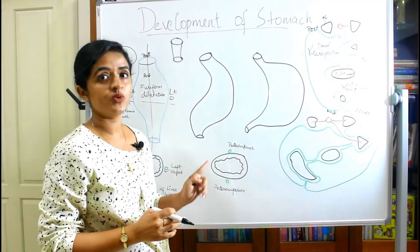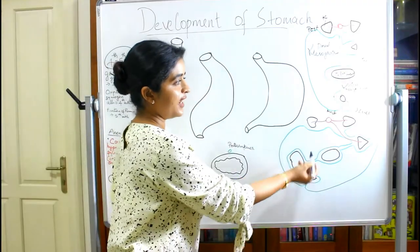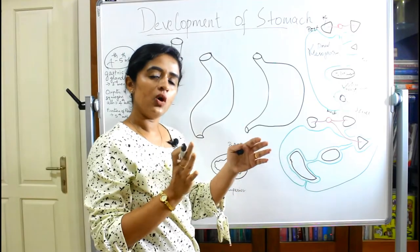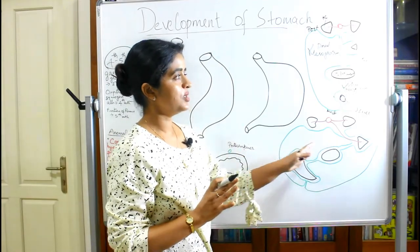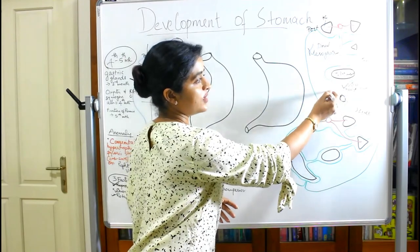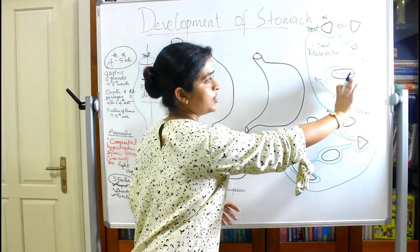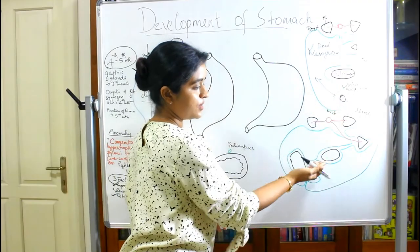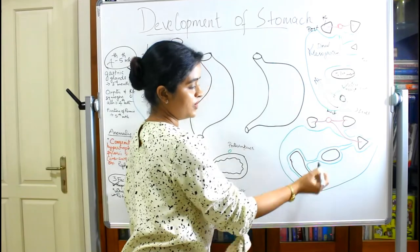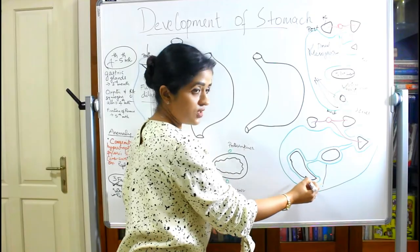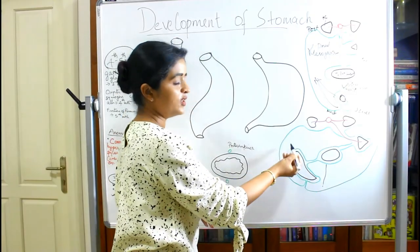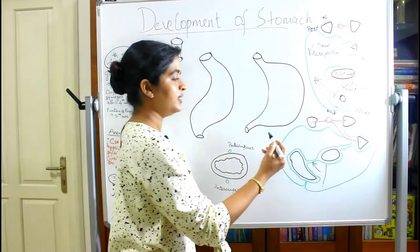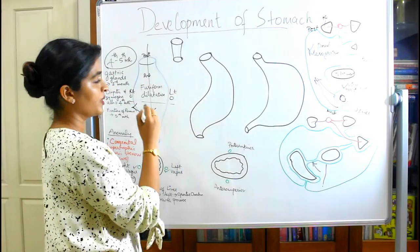As the liver enlarges — it starts as a small bud in the midline — it moves to occupy the right side, pushing the stomach toward the left aspect. Because of this rightward movement of the liver, the ventral mesogastrium is also pushed toward the right side. This is the first factor at work: the rapid enlargement of the liver displacing the stomach.